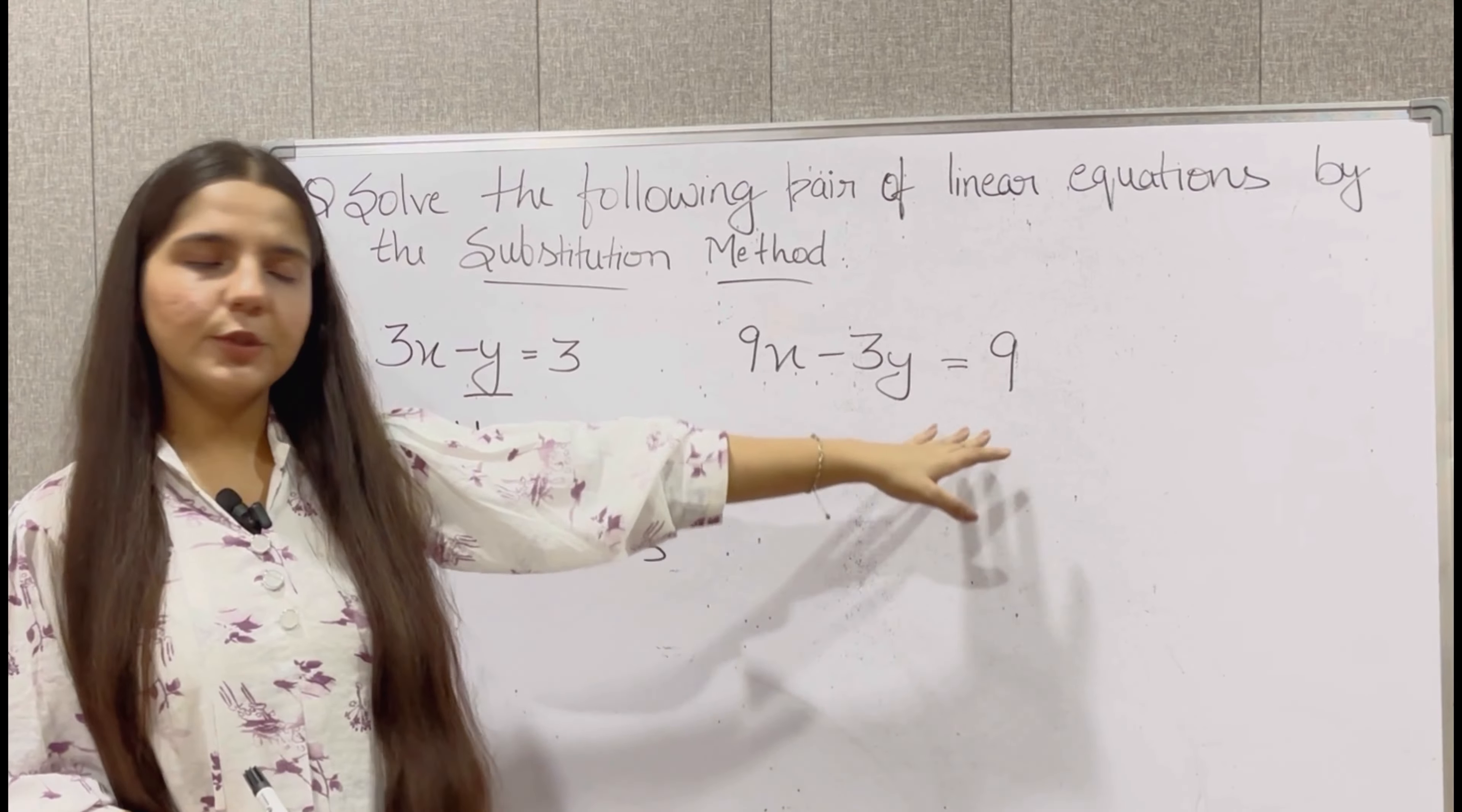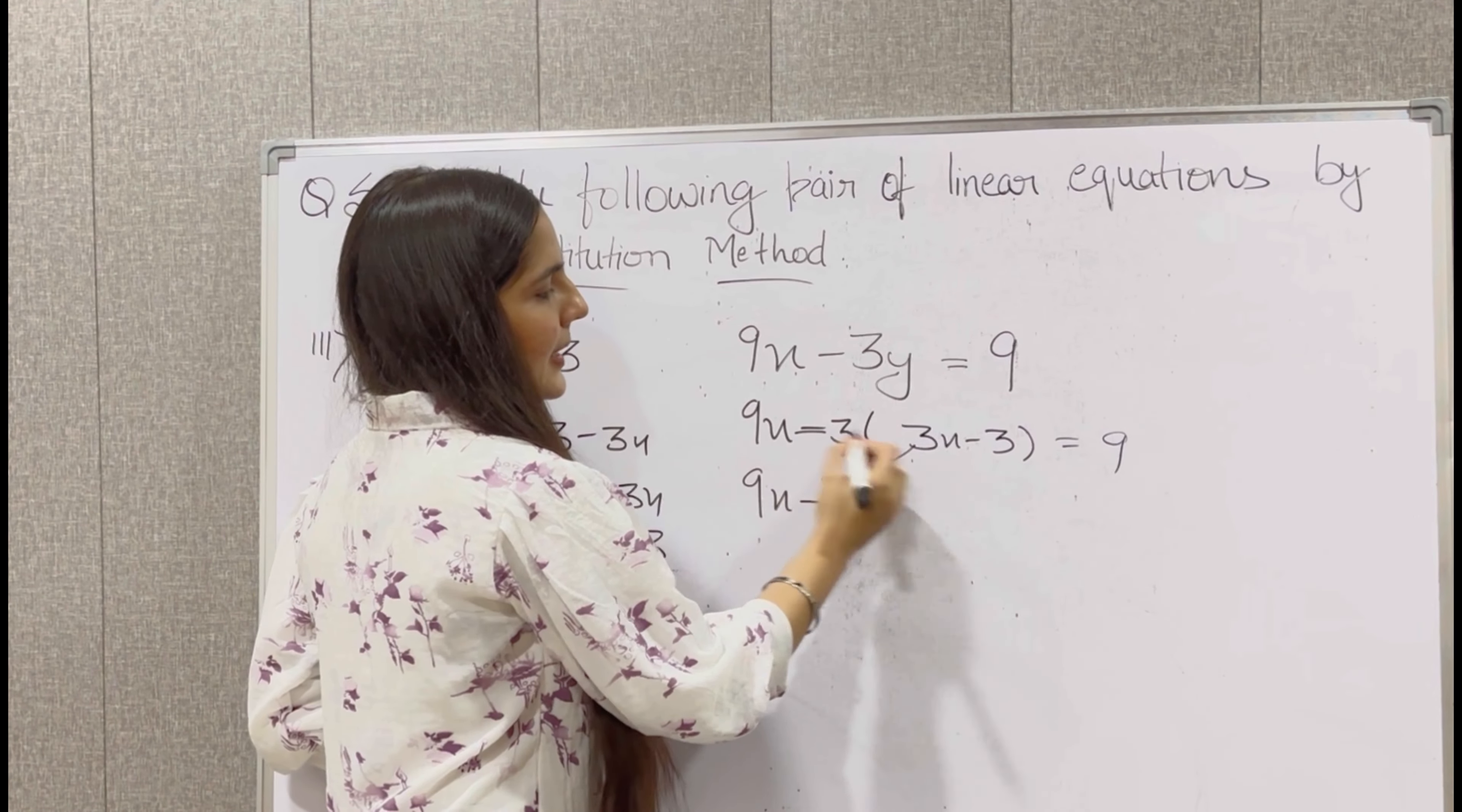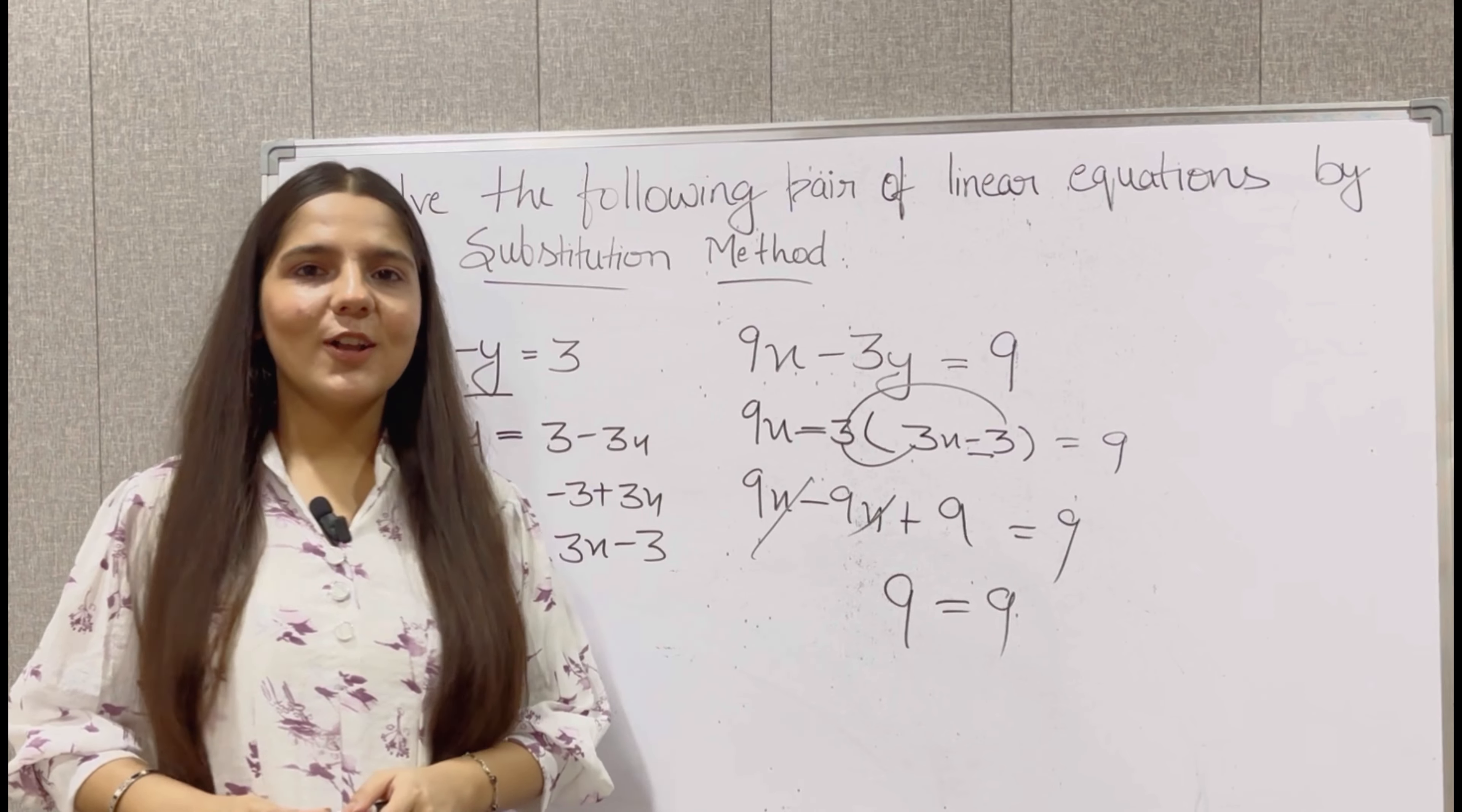Now value of y will be put here. So 9x minus 3 into, in place of y we will write 3x minus 3. So 3x minus 3 gives us 9. So 9x minus 3 into 3 is 9. So 9x, minus multiplied with minus gives us plus. So 3 into 3 is 9, minus 9 equals 9. So this will cancel out. Here we get 9 equals 9. So you will say that the given equations have infinitely many solutions.